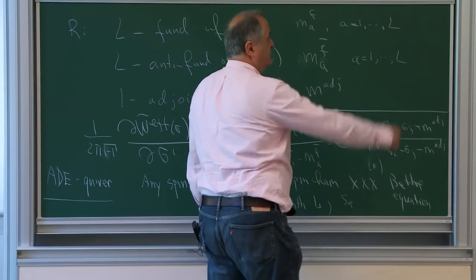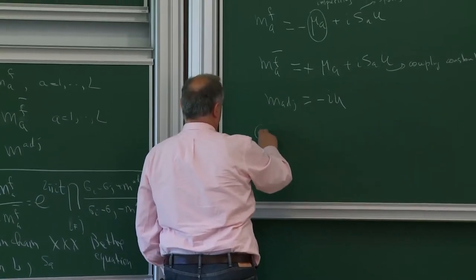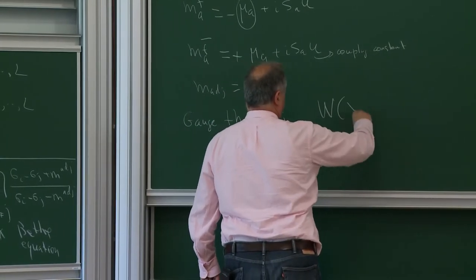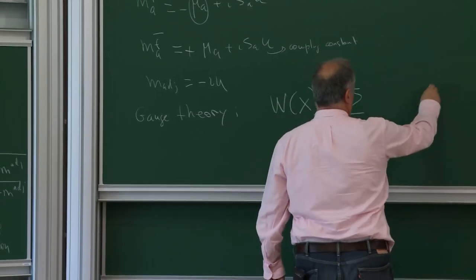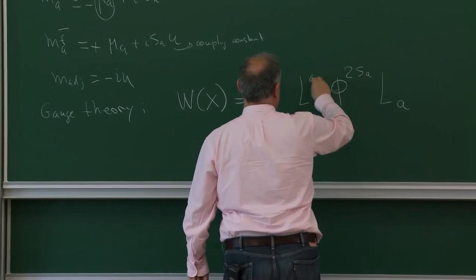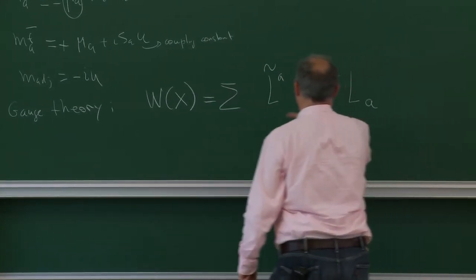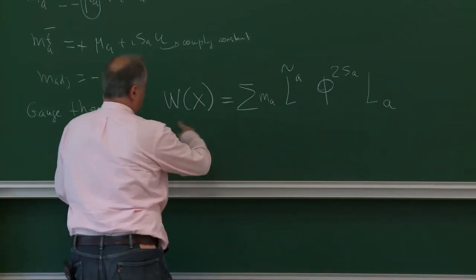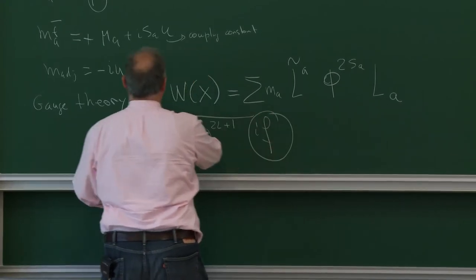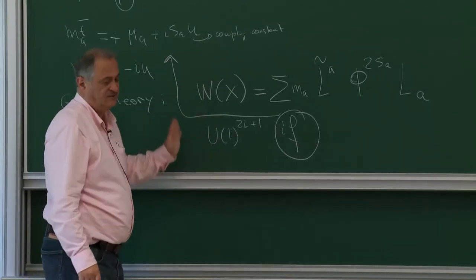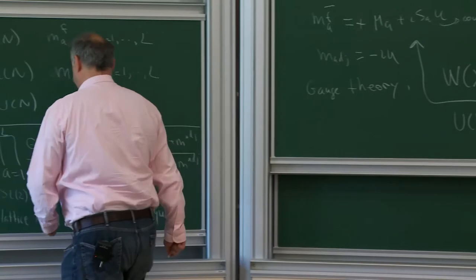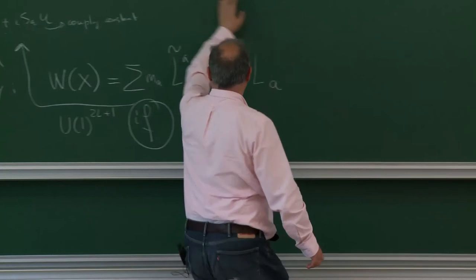What if the relations like that are not satisfied? Well, from gauge theory point of view, this relation came from the statement that I added the ordinary superpotential of following type: I took phi to the power 2*S_A in each lattice point, times the representation A, times the anti-fundamental representation, and multiplied this. There is a sum with some coefficients M_A. This will break the global group to U(1) to the power 2L+1 if this relation is satisfied. If this relation is not satisfied, it will completely break it down to U(1).